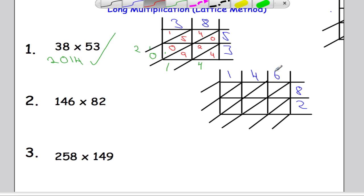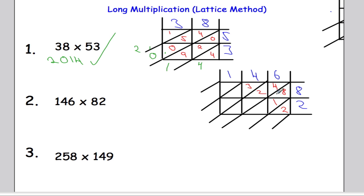6 times 8 is 48 — 4 tens, 8 units. 6 times 2 is 12 — 1 and 2. 4 times 8 is 32 — 3 and 2. 4 times 2 is 8 — 0 and 8. 1 times 8 is 8 — 0 and 8. 1 times 2 is 2 — 0 and 2.